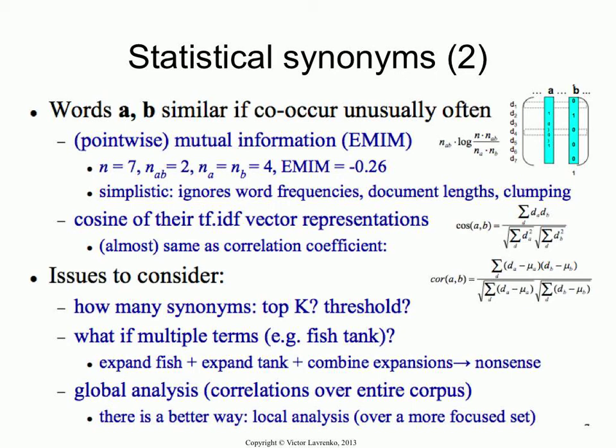Another thing to point out is that cosine — some of you know this already, for some it's new — is closely related to the correlation coefficient. The correlation coefficient is your basic statistical bread and butter: how do you measure the strength of relation between two variables in statistics? You measure the correlation coefficient by looking at the covariance and dividing it by the product of the standard deviations. What I'm going to claim is that when you're working with terms, your correlation coefficient is going to be really, really similar to the cosine.